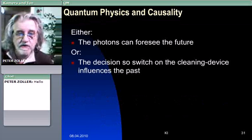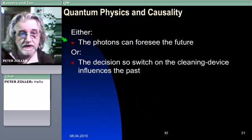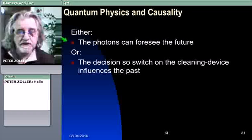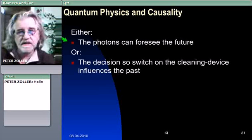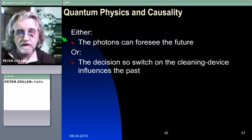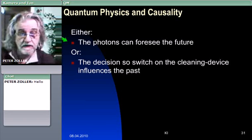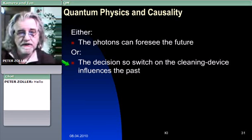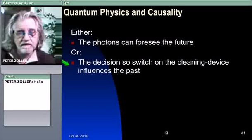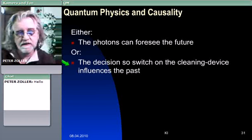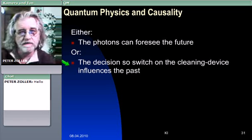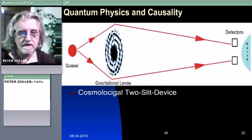So this leads to only two possibilities. Either the photons can foresee the future, because they know in advance what you will do, switching on or off this cleaning device, so that they can reunite or not. Or, the decision to switch on the cleaning device influences the past, namely the past at the time point when the two photons arrive at the semi-transparent mirror.